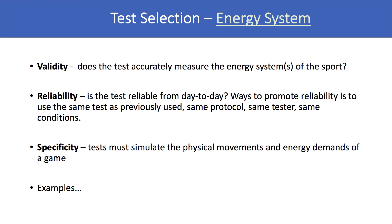One factor to consider when selecting a test is the energy systems of the sport. Does the test accurately measure the energy system — whether it's an endurance-based sport versus a speed or power-based sport? You also want to use the same test as previously used, the same protocol, tester, and conditions to promote reliability. For an endurance-based sport, you might assess VO2 max and lactate profiling using a graded exercise test, or indirectly using a field-based test like the Leger BEEP test. For a speed-based sport, you may assess acceleration, speed, and 40-meter sprints more specific to that sport's demands.